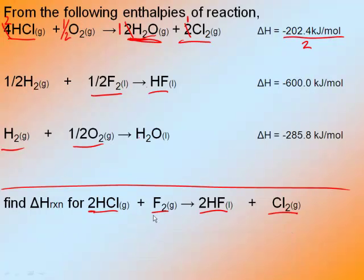I continue down the line. I look at F2 — there's only one F2 needed in the overall, but I have a half up here. How do I turn a half into a whole? I multiply by two. So I multiply everything by two: a half times two is one, a half times two is one, and one times two is two. I multiply my delta H by two. I look for my HF — I need two HFs, and now I have two HFs. I need one Cl2, and I have one Cl2.